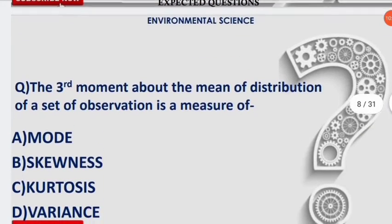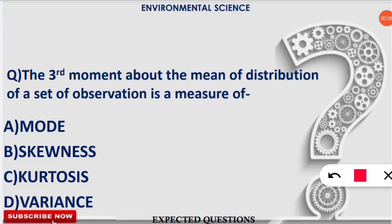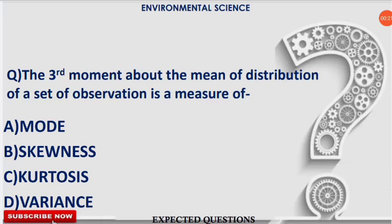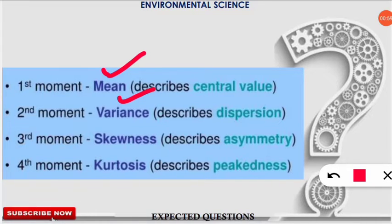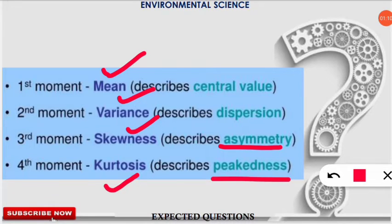The next question: the third moment about the mean of a distribution is a measure of what? The correct answer is option B — skewness. The first moment is described by the mean (central value); the second moment is given by variance and standard deviation; the third moment is skewness, which describes asymmetry; and the fourth moment is kurtosis, which describes peakedness.